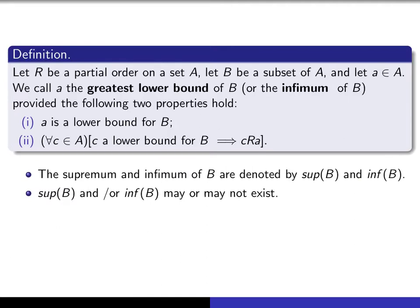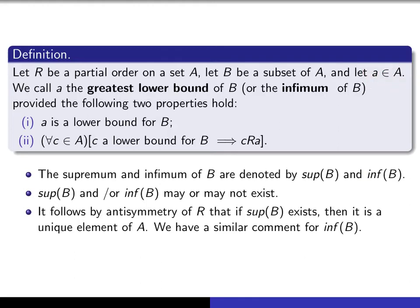A shorthand for referring to the supremum and infimum of B are sup of B and inf of B. Just because we define them, it doesn't mean that we know they exist — we'll see some examples to indicate that they sometimes don't exist at all. Notice that in order for it to exist, it has to be an element of A. One thing we can prove is that if the supremum of a set B does exist, then it is unique. If you had two different elements both satisfying the requirements to be the supremum, they would both be upper bounds, and each would be less than or equal to the other, so by anti-symmetry they would both have to be equal to each other.